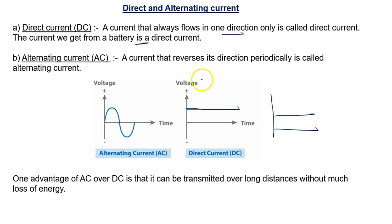Alternating current is the current that changes the direction periodically. Like here, initially current is positive. After half, it is negative. One advantage of AC over DC is that it can be transmitted over long distance without much loss of energy.